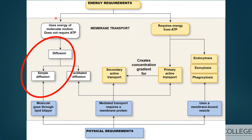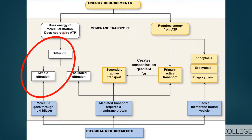Looking at this flowchart, today we're going to be looking at simple (or passive) diffusion — they mean the exact same thing. We'll also look at facilitated diffusion, secondary active transport, and primary active transport. I'm not going to cover transport of membrane-bound vesicles — endocytosis, exocytosis, pinocytosis, or phagocytosis — we're just going to stick to these main methods of transport.